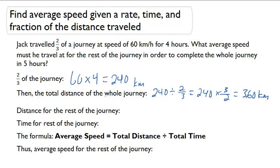The distance for the rest of the journey has to be the difference between those two. 360 minus 240, which means that there's 120 km left for the rest of the journey.